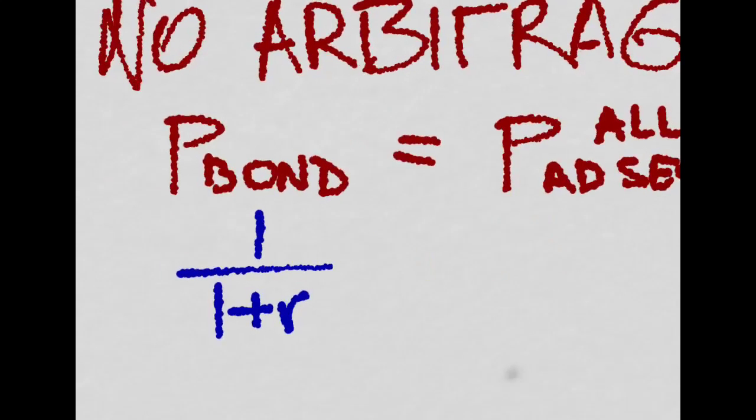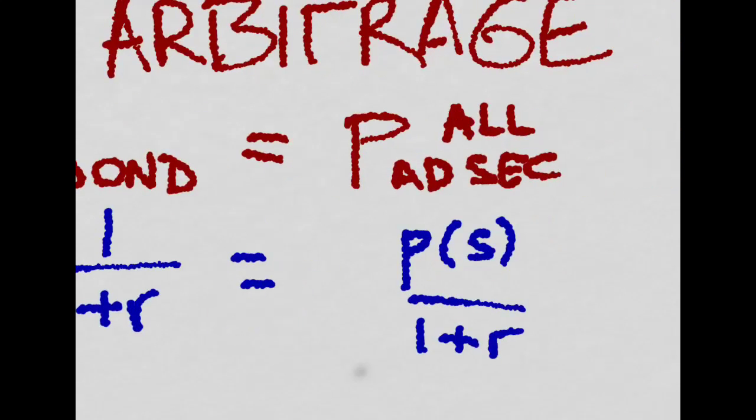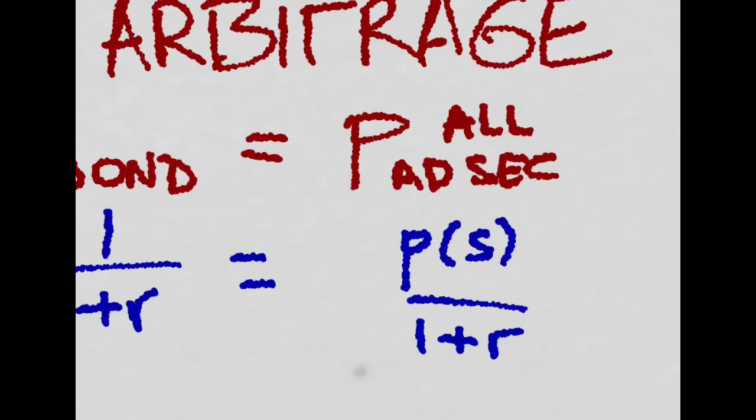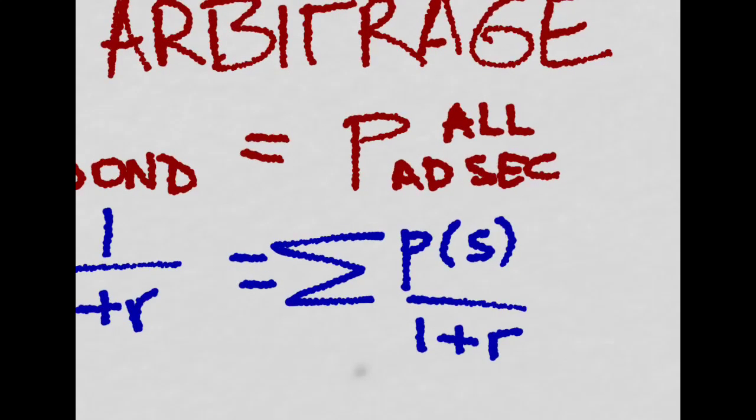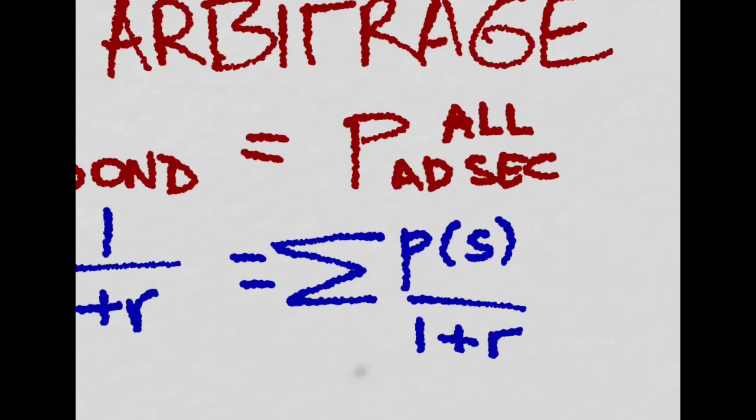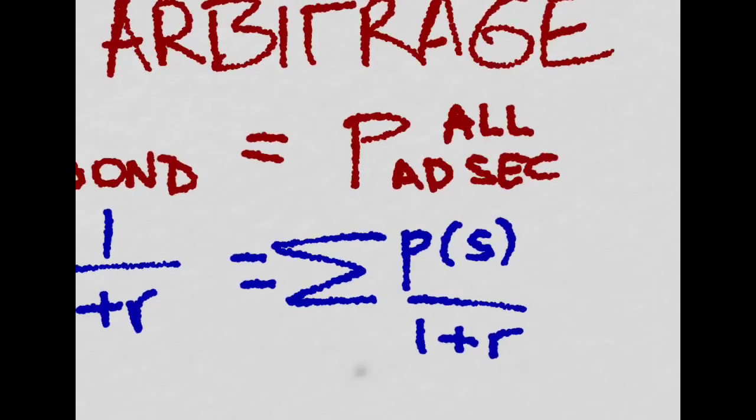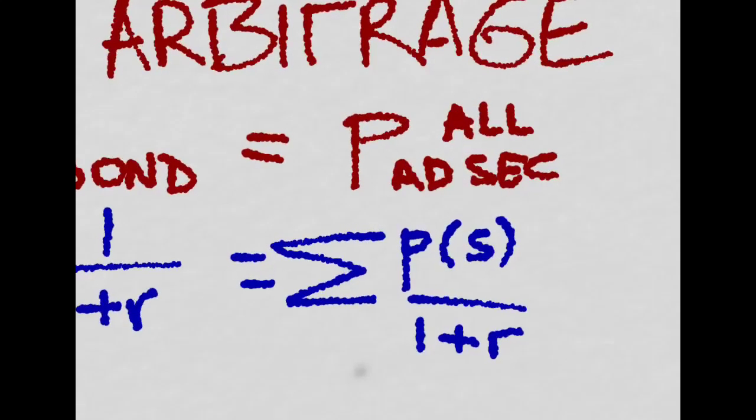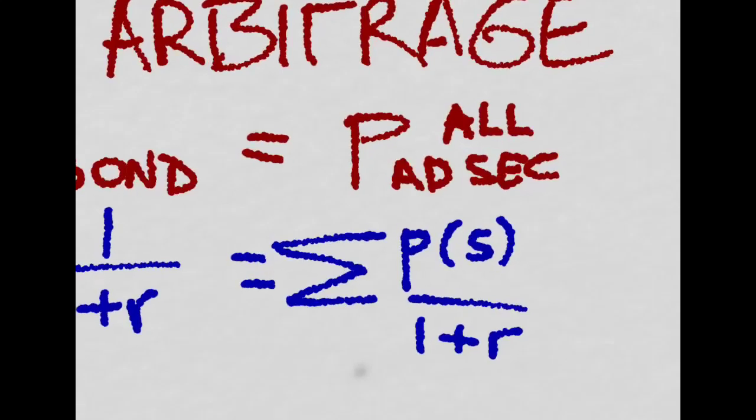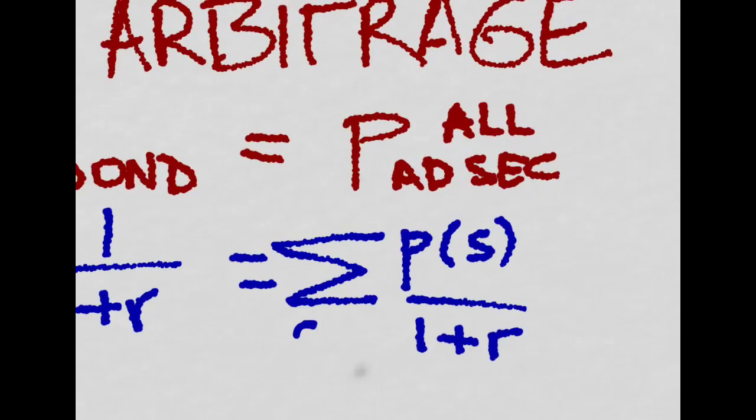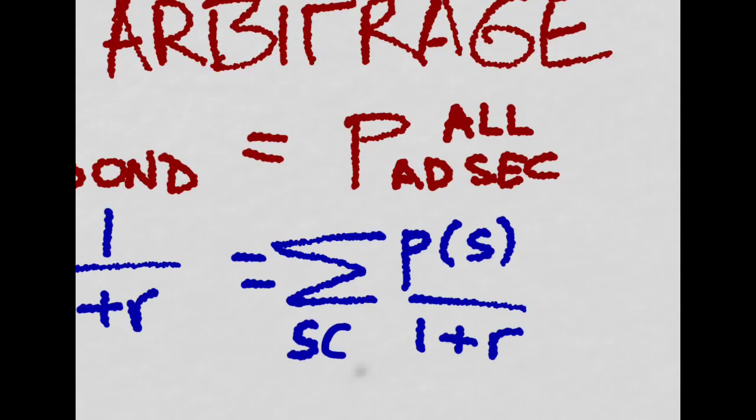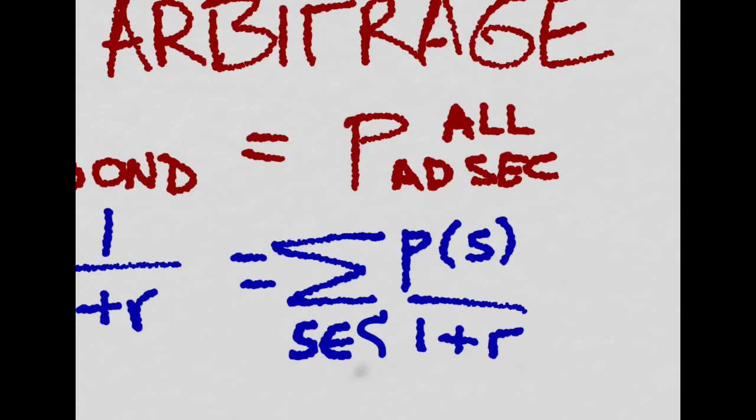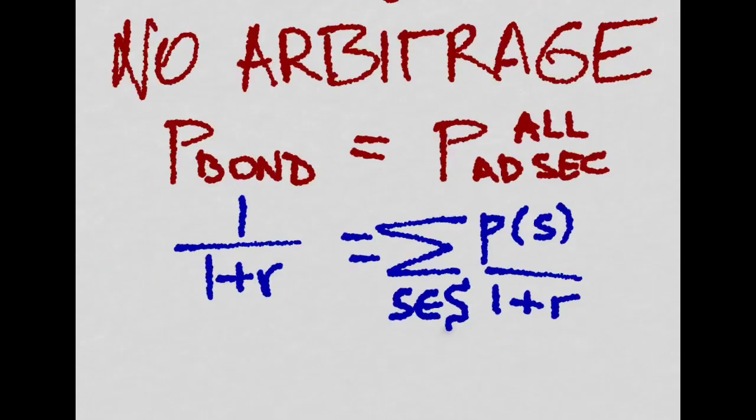And that has to be equal to the sum of all of the prices of the Arrow-Debreu securities, meaning you sum up the price that you pay to insure yourself against each state of the world. And in equilibrium this no arbitrage condition has to hold.